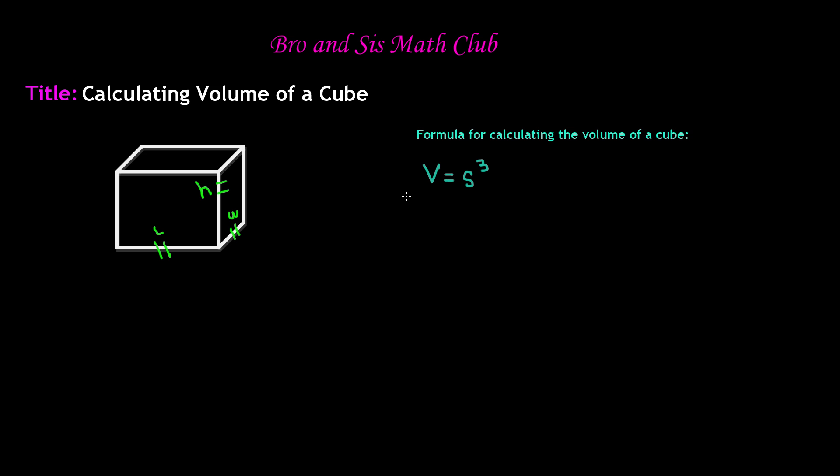So as long as we know the measurement of one of these, if we know the length, the width, or the height, we can figure out the rest. So let's say that we know the length is equal to four inches. That means the width and the height have to be four inches as well.